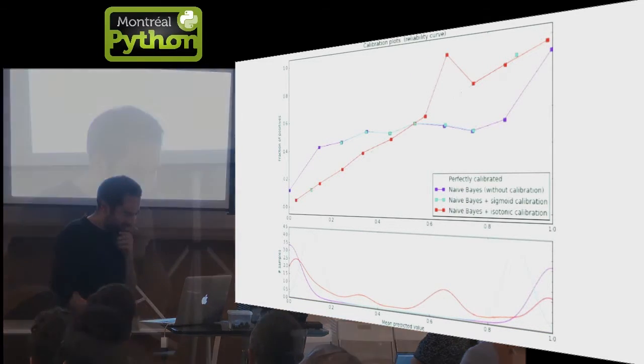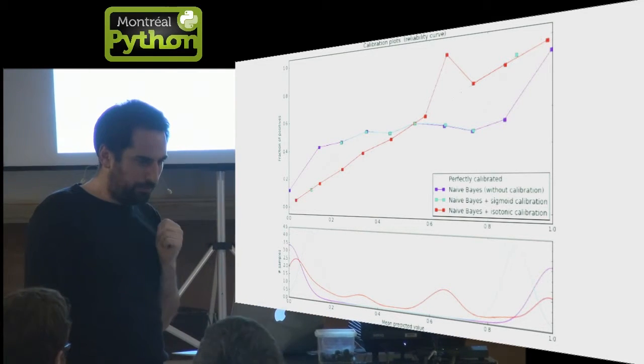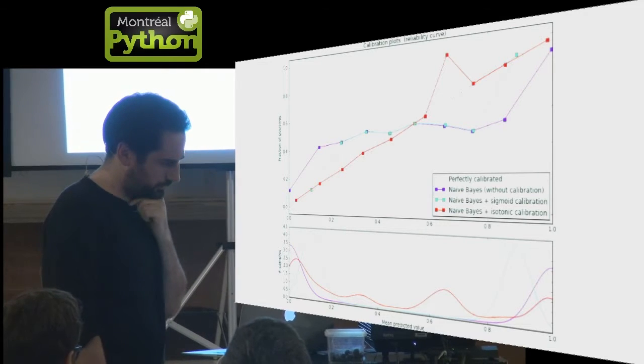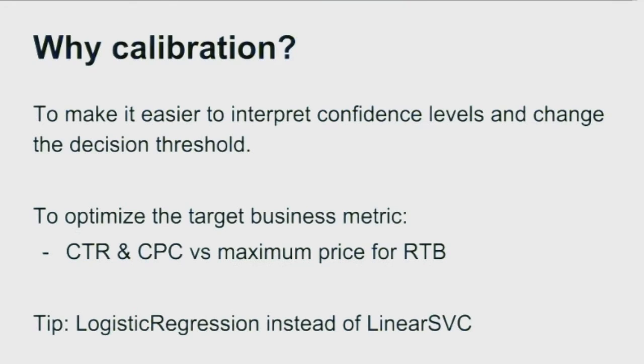For naive Bayes, you see that the sigmoid parametric model fails completely to calibrate the model, because it's making an assumption that is not true for the naive Bayes model, whereas the isotonic calibration method does not make that assumption and kind of works. Except the bug. It's going to work better.